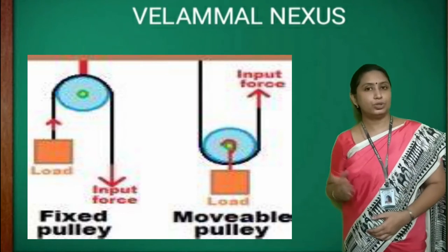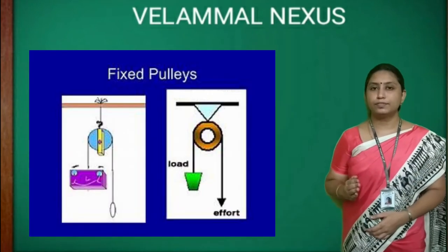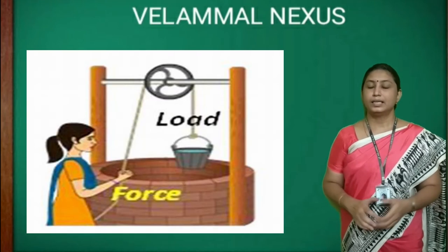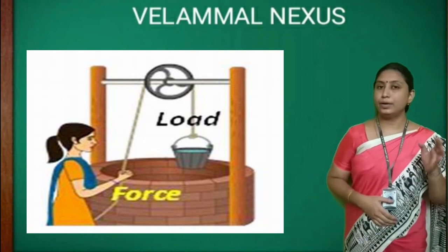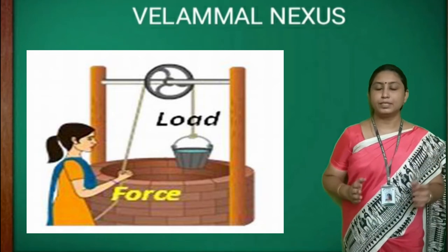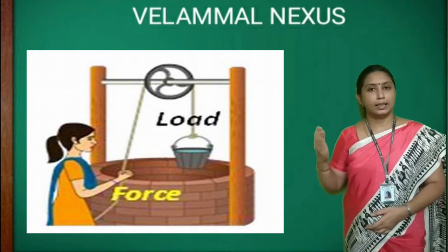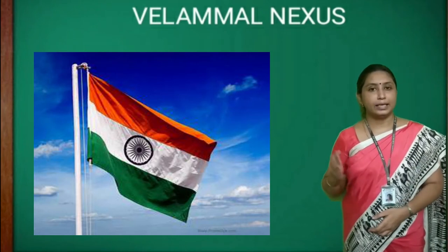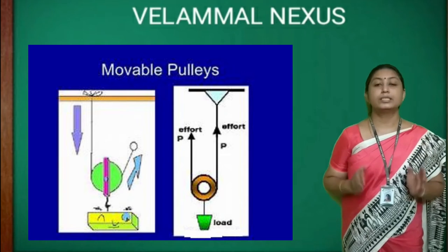A pulley can be of two types: fixed and movable. In a fixed pulley, the axle of the pulley is fixed to some kind of support such as a hook or a wall. This type of pulley is commonly used to draw water from a well — one end of the rope is attached to the bucket (the load) and the other end is pulled (the effort). When we pull the rope, the wheel turns and the bucket of water moves up. This type of pulley is also used to raise flags on a flagpole and in sailboats.